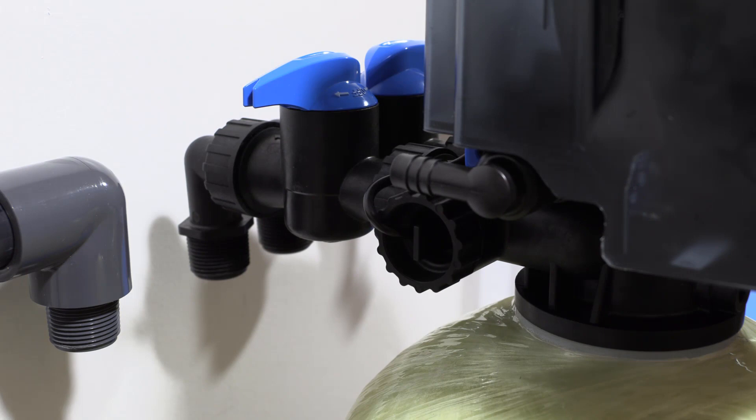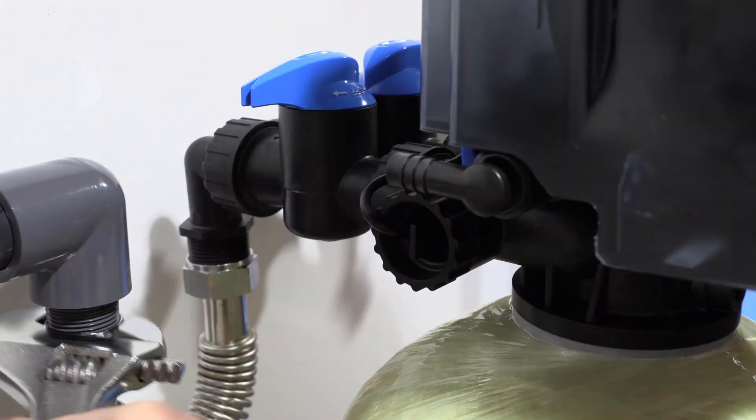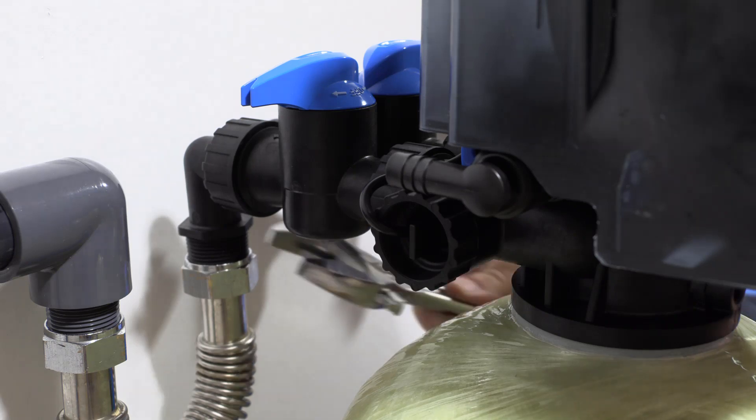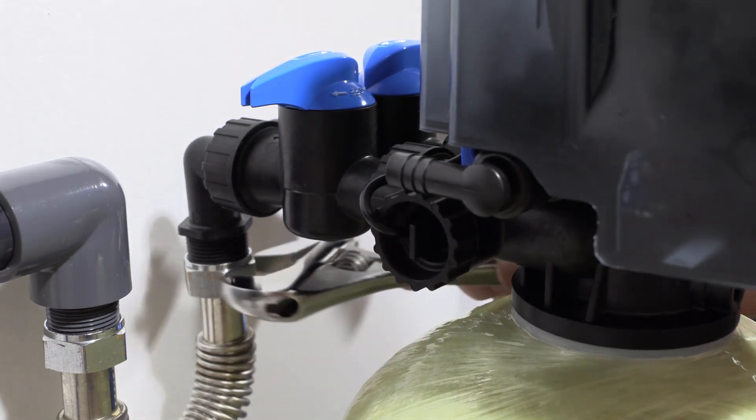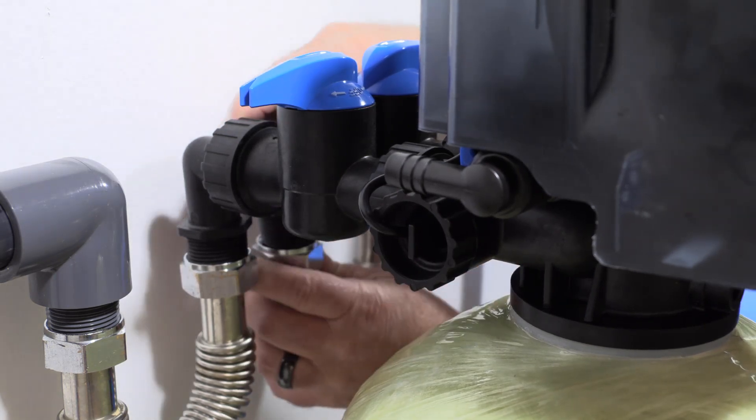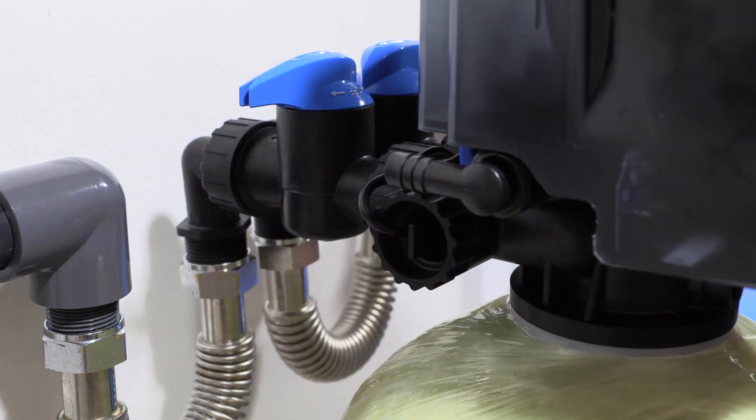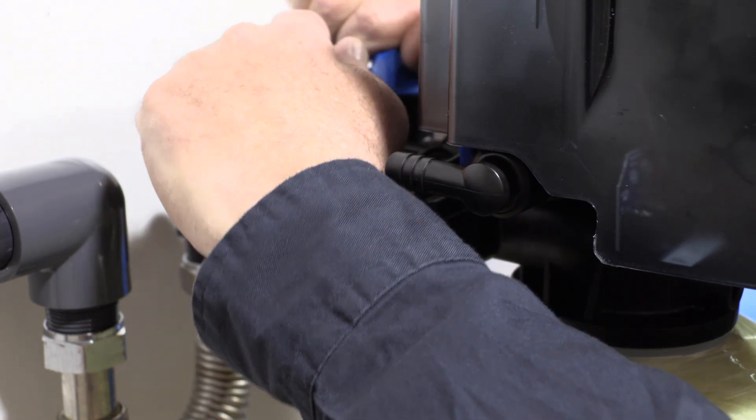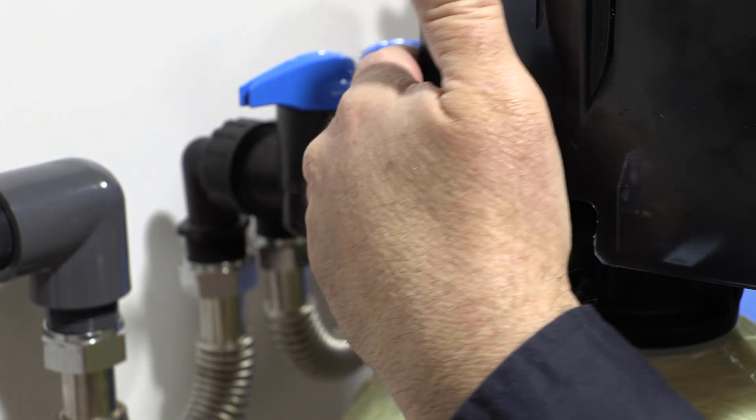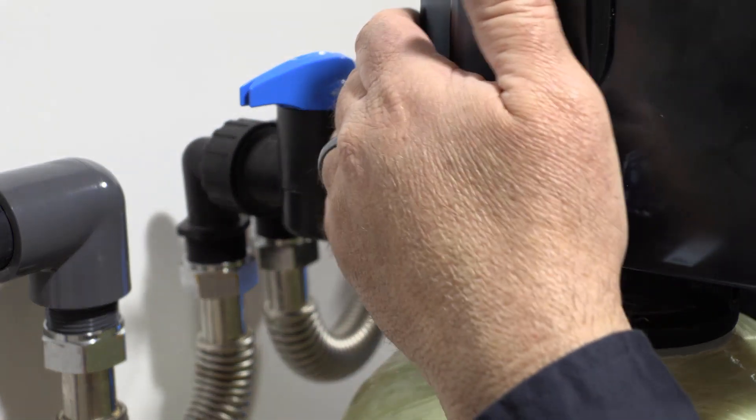Okay, we're going to go ahead and install our inlet and outlet flex lines now. Our bypass valve is in the bypass mode. So that means both valves are facing each other. Basically, the inlet water comes in and stays on this side of the valve. It just goes through the valve and out. It does not go into the tank yet.